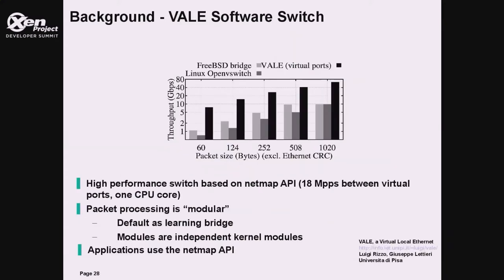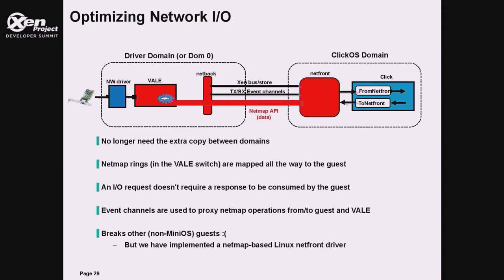Vale was built as an extension to Netmap and is built around the same concepts. The graph on top shows a comparison of packet forwarding between two 10-gigabit NICs using FreeBSD Bridge and OpenVSwitch versus Vale's virtual ports. Access to these virtual ports is done with the Netmap API, where each virtual port uses a separate memory region. In Vale, the switching fabric is decoupled from the switching logic, meaning other kernel modules can extend the switch to implement their own lookup functions. The default provided by Vale is a layer-2 learning bridge.